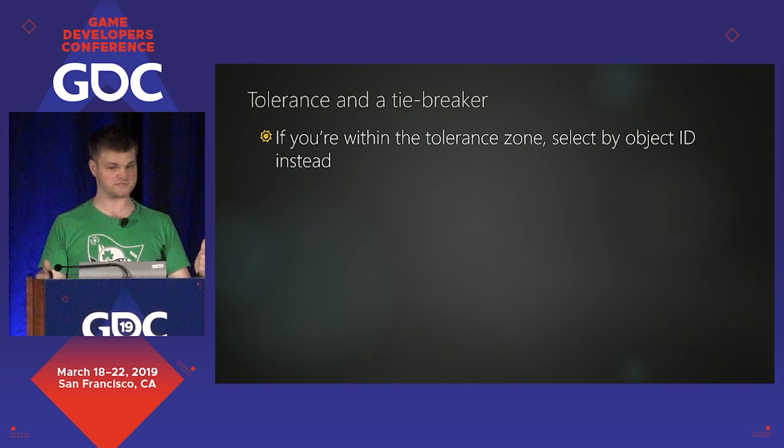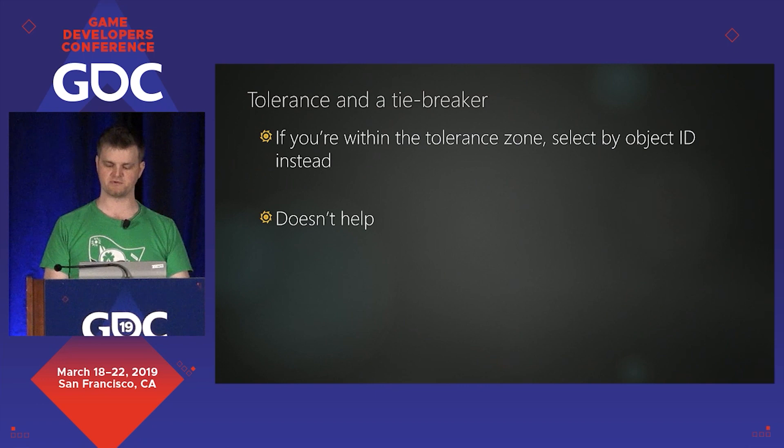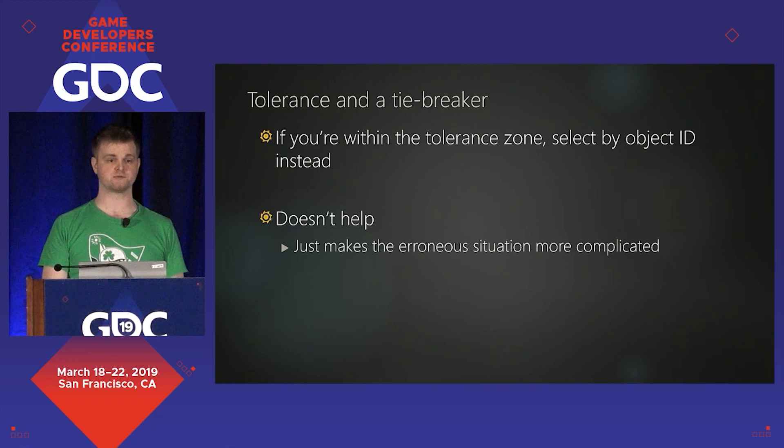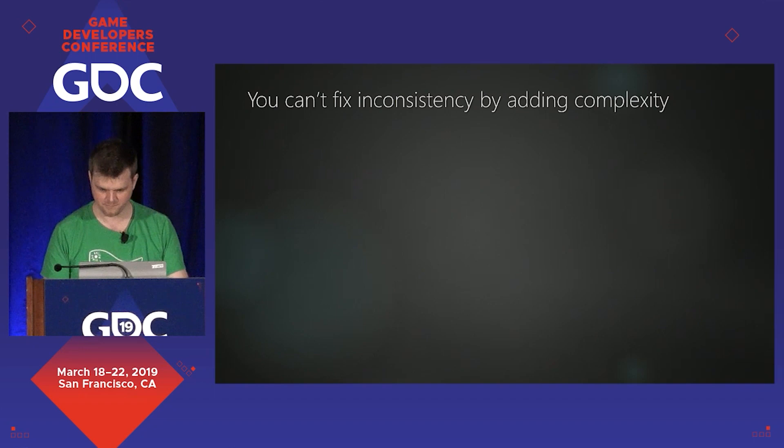You cannot use tolerance and a tiebreaker. You cannot use this sort of escalation of complexity to fix floating point problems caused by inconsistent predicates. It doesn't work. This is a real-life problem, not just a game one. Two cars come to a four-way stop. The law says the driver who gets there first goes first, but if two drivers get there at the same time, the driver on the right goes first. Now instead of wondering whether you were there first or second, you're wondering whether you were there at the 'same enough' time. Exactly the same problem — a bug caused by inconsistent predicates.